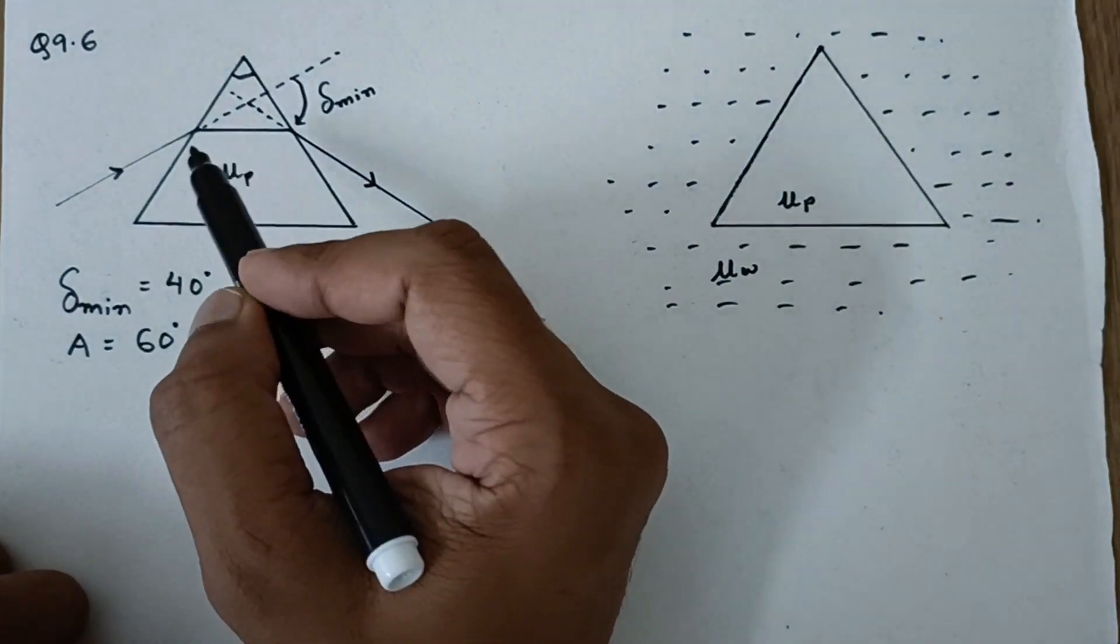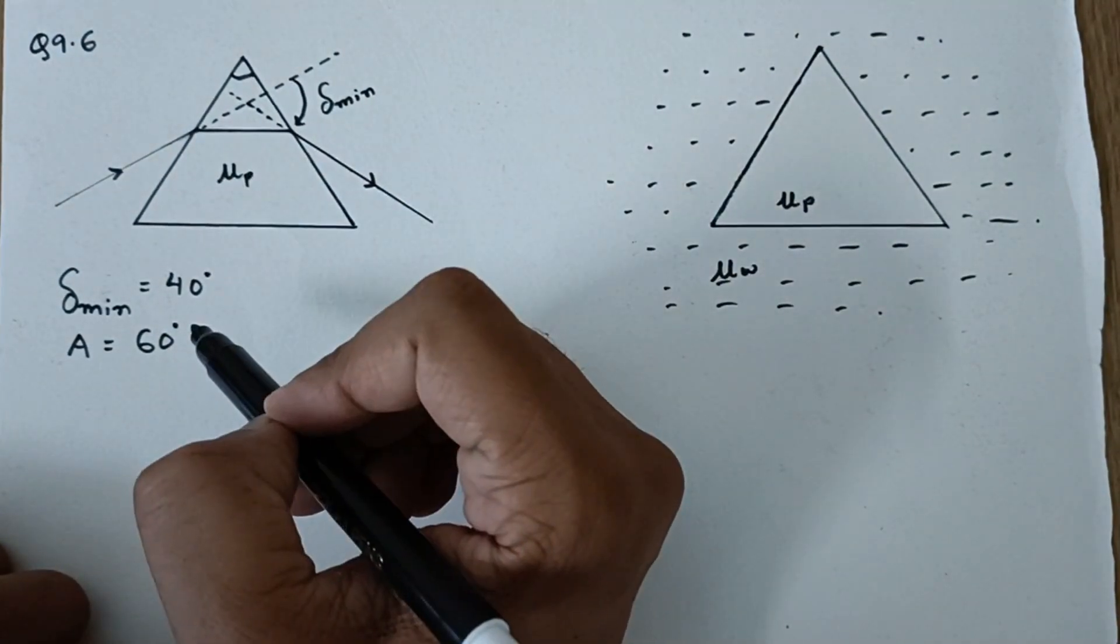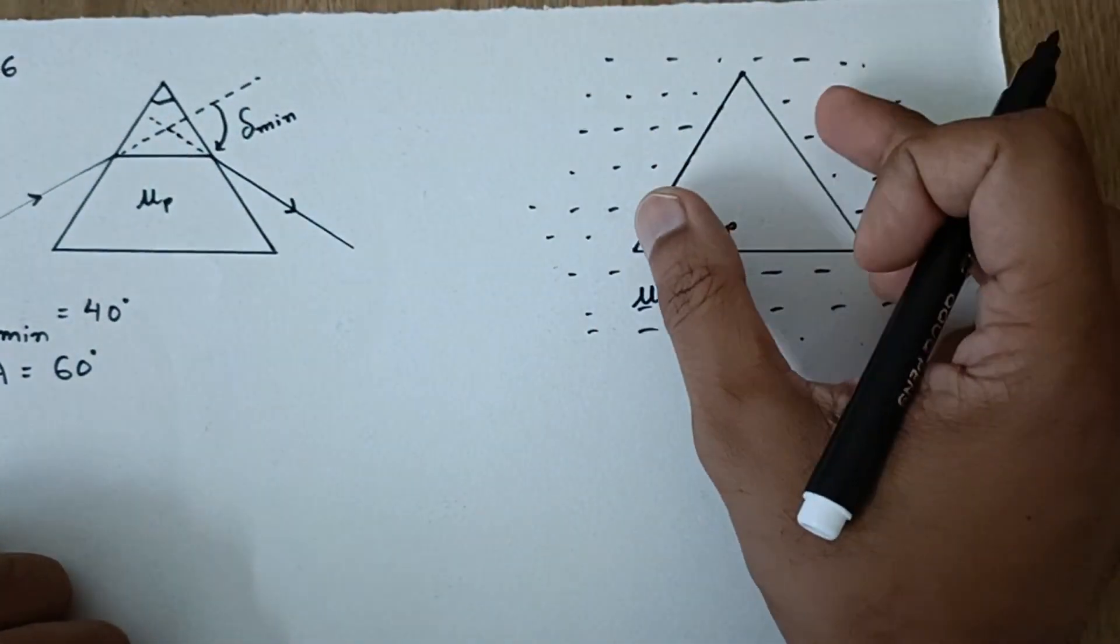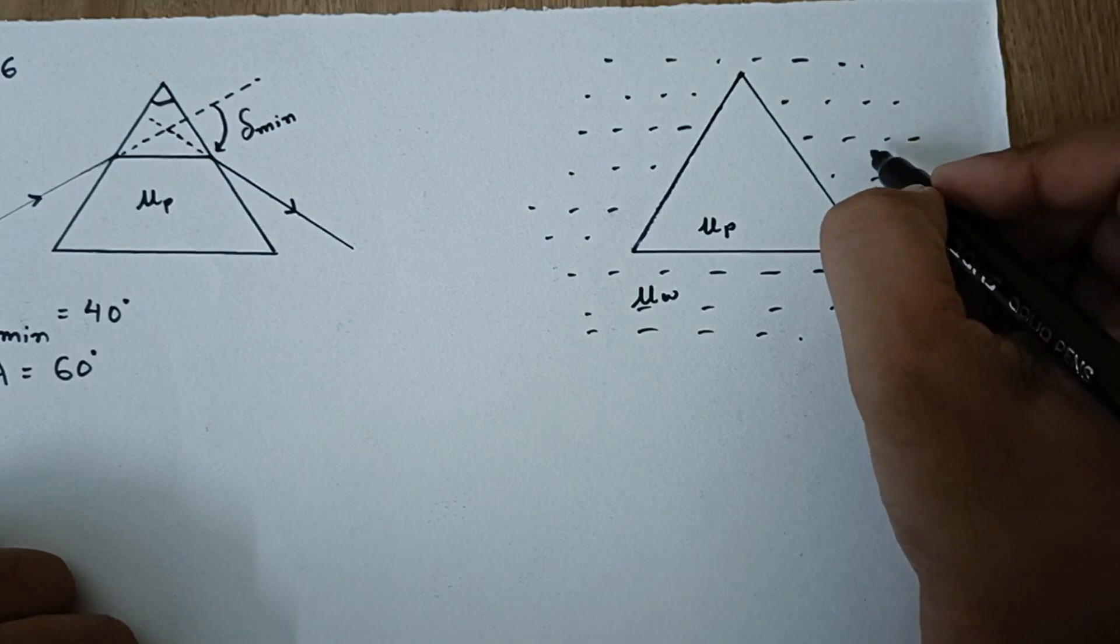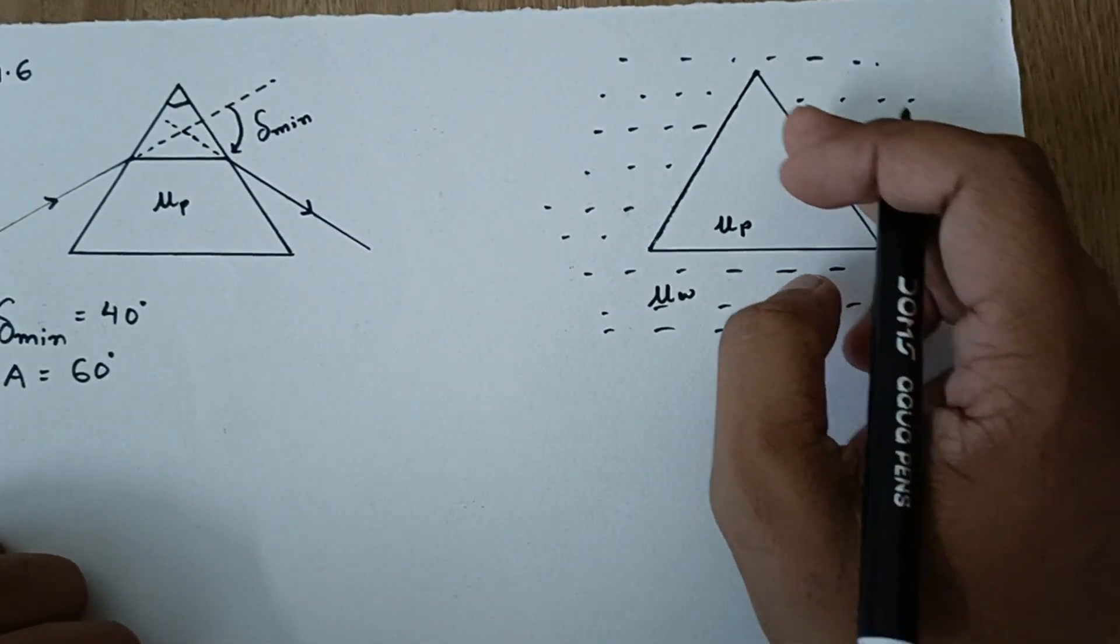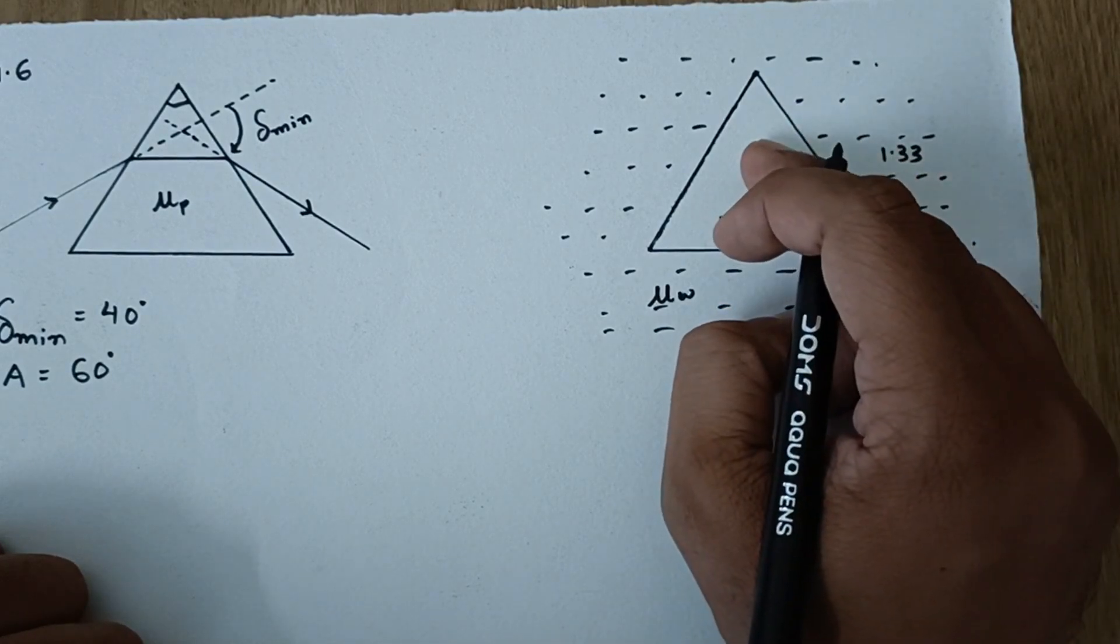Now we will have to find the refractive index of the prism first by the given data, and then they are asking that if you immerse this prism inside water of refractive index 1.33, what will be the new angle of deviation for this particular case?